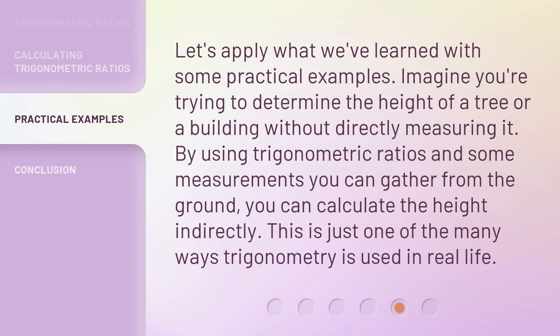Let's apply what we've learned with some practical examples. Imagine you're trying to determine the height of a tree or a building without directly measuring it. By using trigonometric ratios and some measurements you can gather from the ground, you can calculate the height indirectly. This is just one of the many ways trigonometry is used in real life.